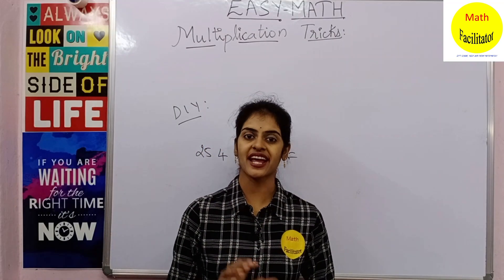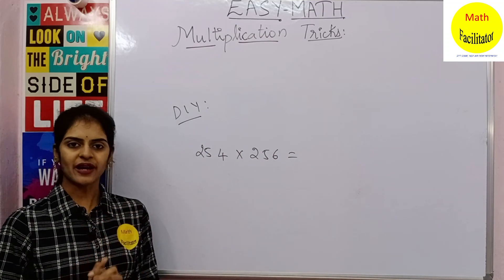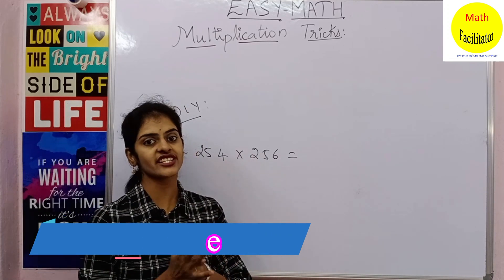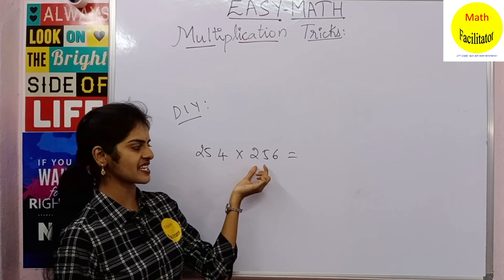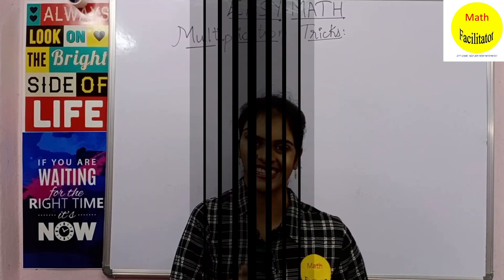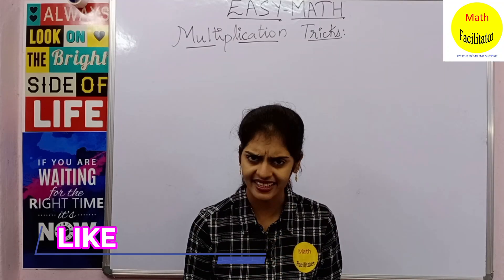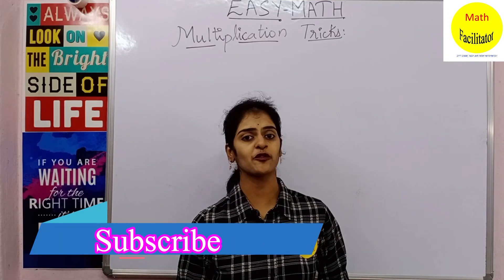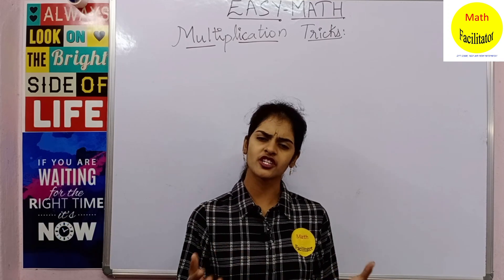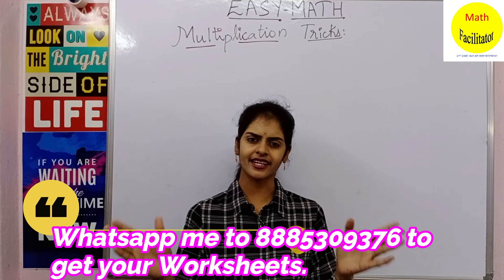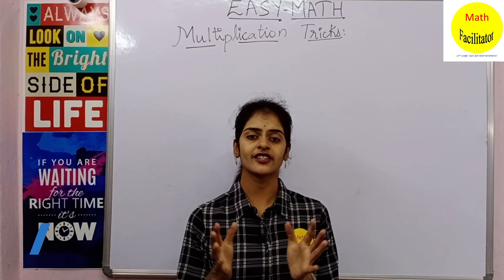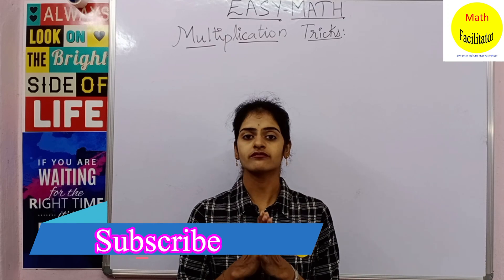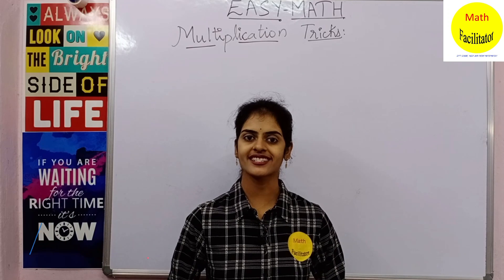Now it is your turn — multiply 254 by 256. First check the condition: verify that the sum of the units digits is 10, and that the remaining digits are the same. Then apply the technique. I hope you are clear with the concept. If you liked this video, give it a thumbs up, share it with your friends, subscribe to the channel, and do text me to get your free worksheets. Watch the video, practice the worksheets, and you will be perfect with your calculations. Thanks for watching.